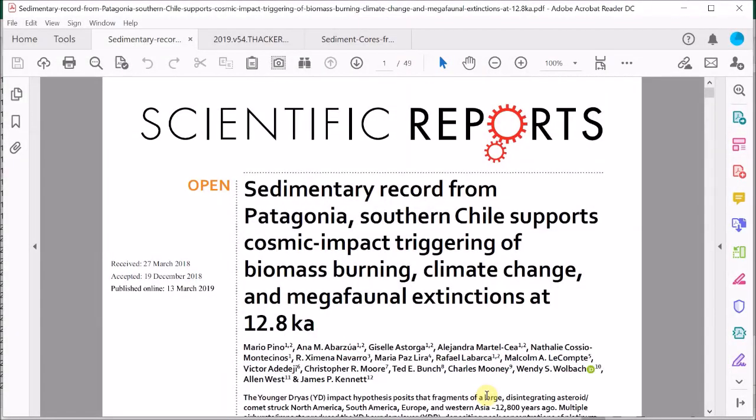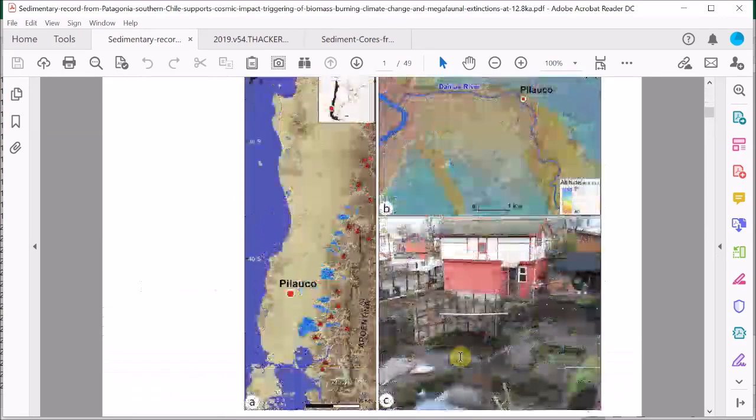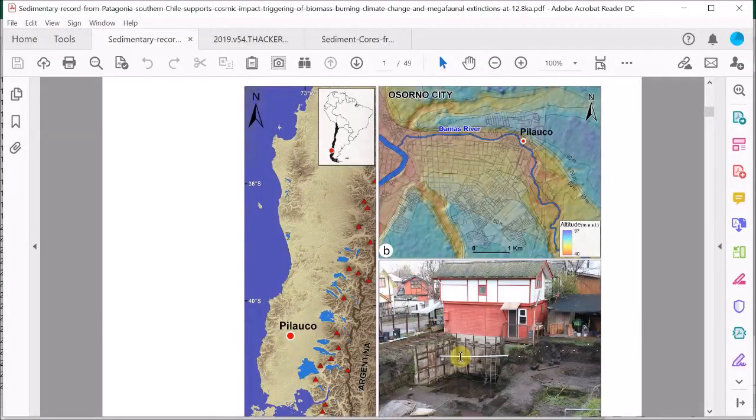Now this is an important paper because it extends the Younger Dryas black mat down to the southern end of the Americas. Here we are in Osorno city, which is at the southern end of Chile, and specifically we're at the Pilauco site in Osorno city.